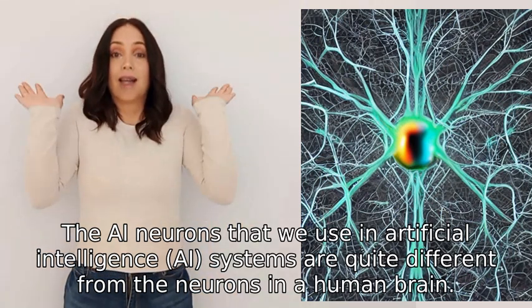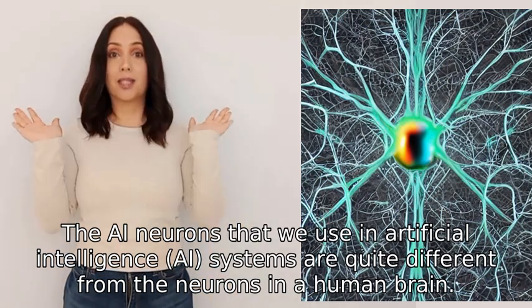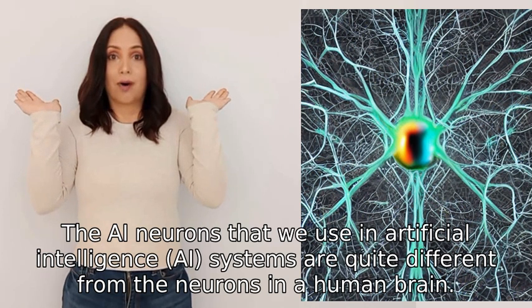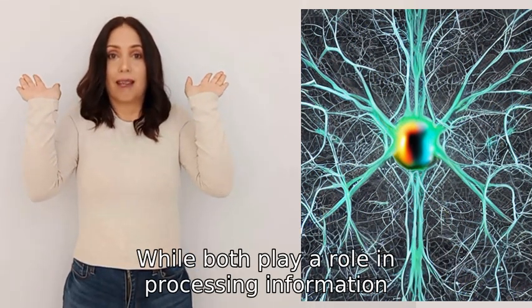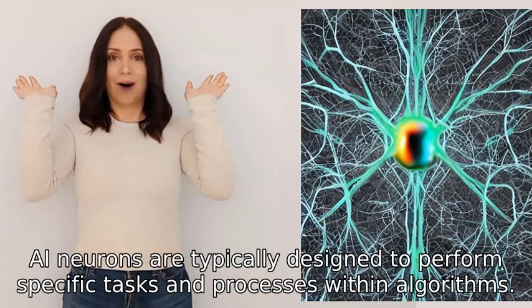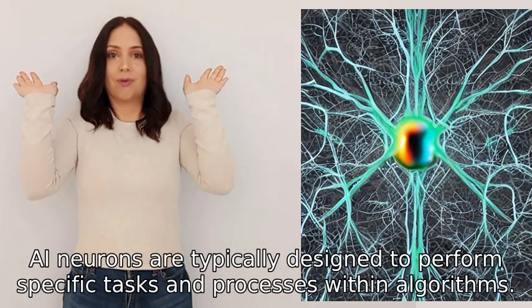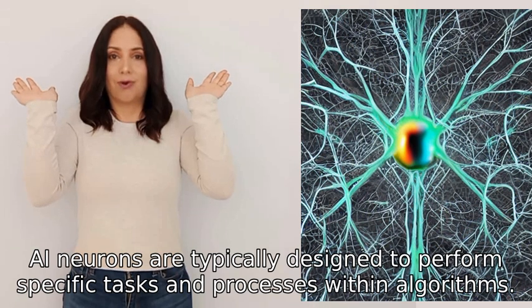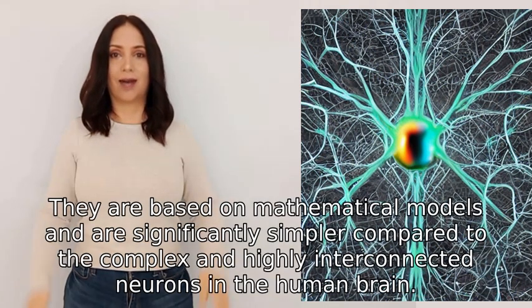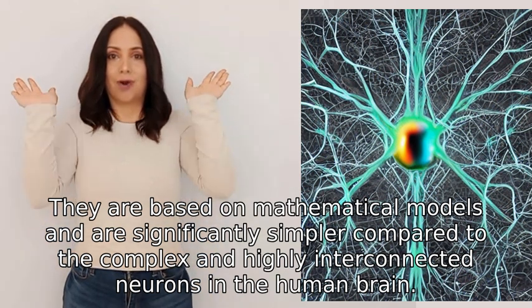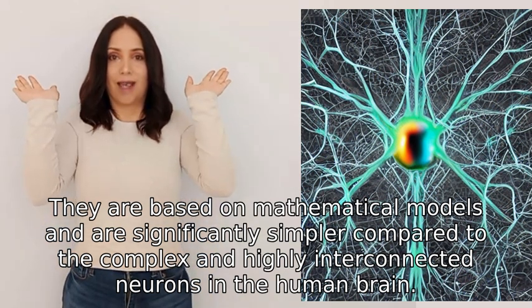The AI neurons that we use in artificial intelligence systems are quite different from the neurons in a human brain. While both play a role in processing information, AI neurons are typically designed to perform specific tasks and processes within algorithms. They are based on mathematical models and are significantly simpler compared to the complex and highly interconnected neurons in the human brain.